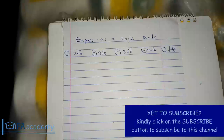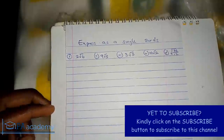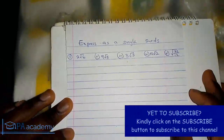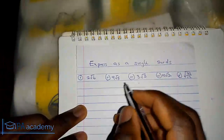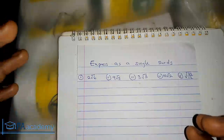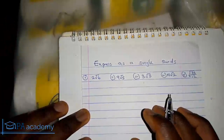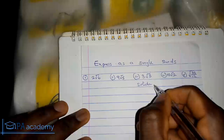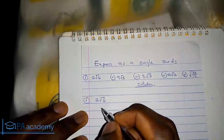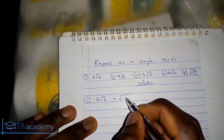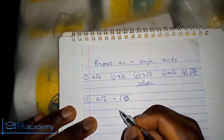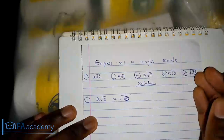Hello everyone, welcome to PA Academy. This is Part 2 of the video series on surds. If you missed Part 1, check the video description for the link. In Part 2, we are going to look at examples where we express surds as a single surd — meaning we want to have just a single square root with a single radicand, rather than a number in front of the root sign.